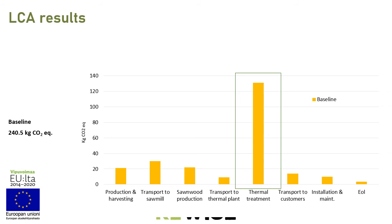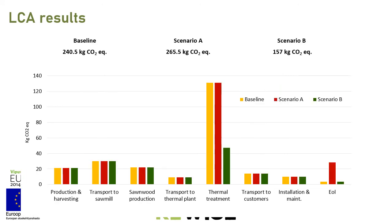Next, because we want to know what happens to our model under different scenarios, we do scenario analysis — two types. In scenario A, we change the end of life management. In the baseline scenario, we do incineration of the disposed wood, but in scenario A we want to know what happens if that wood is landfilled instead. We can see that landfilling — the red bar compared to the yellow baseline bar — has a much worse environmental impact: landfilling costs 8.5 times higher impact than the baseline scenario.